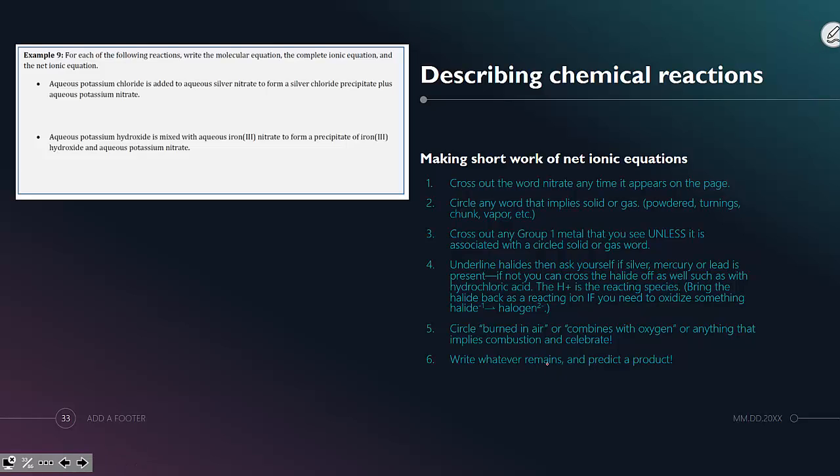So for this first one, aqueous potassium chloride is added to silver nitrate to form silver chloride and potassium nitrate.